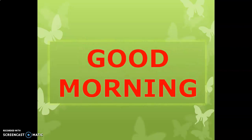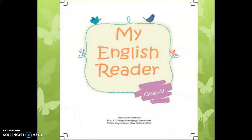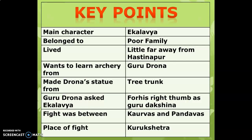Good morning children, welcome back to English virtual class. Take out your English reader book. Today we will do the back exercise of Unit — 'Where There Is a Will' — and the chapter is 'Limits of Mind.' First, let's revise the key points about the story.